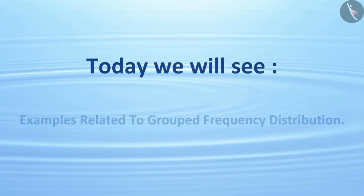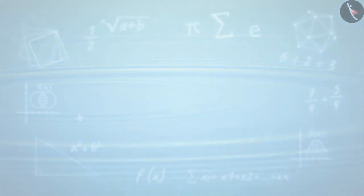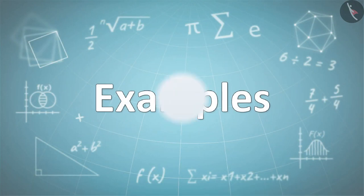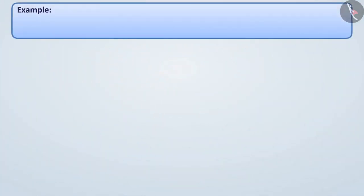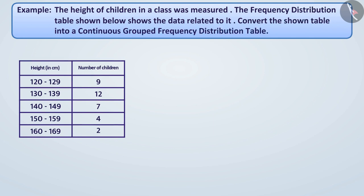Today we will see examples related to grouped frequency distribution. Example: The height of children in a class was measured. The frequency distribution table shown below shows the data related to it. Convert the shown table into a continuous grouped frequency distribution table.